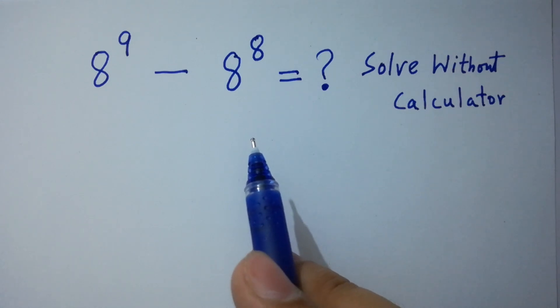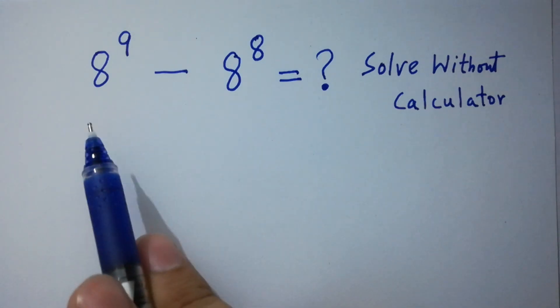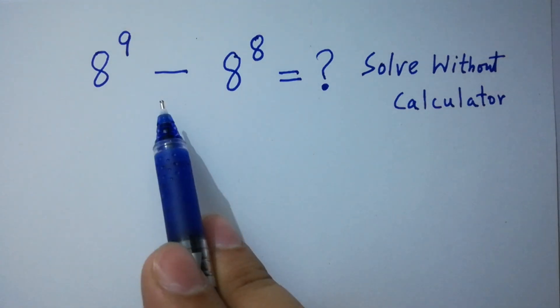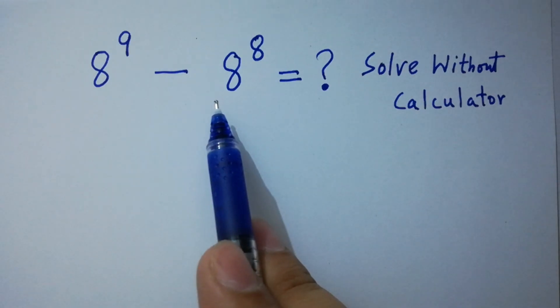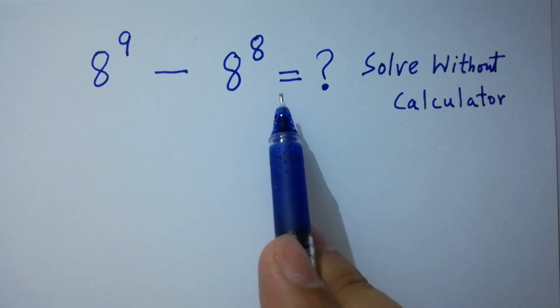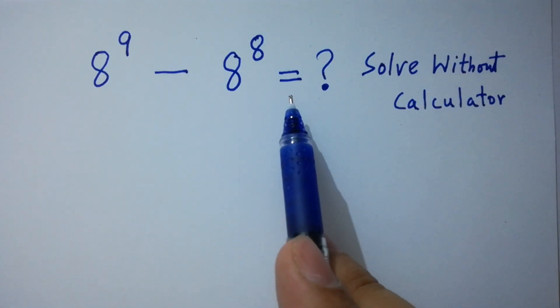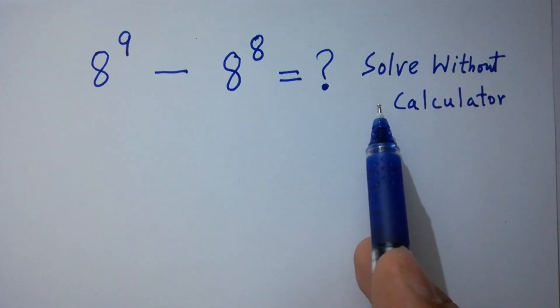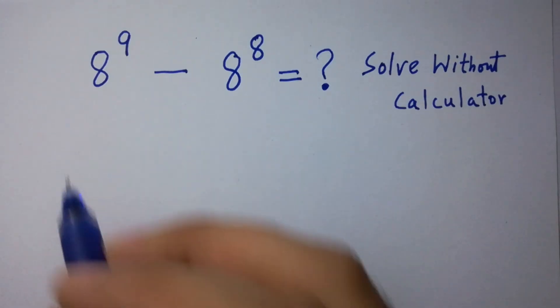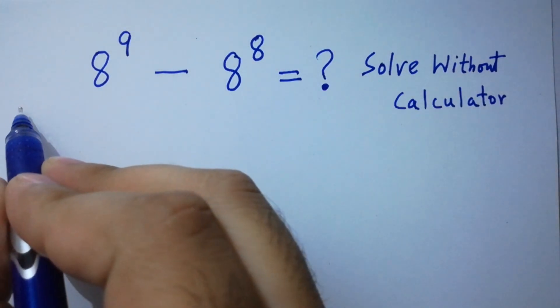Hello friends. 8 to the power 9 minus 8 to the power 8 equals what? Solve without calculator. Let's have a solution.